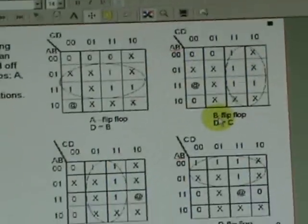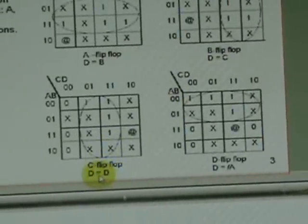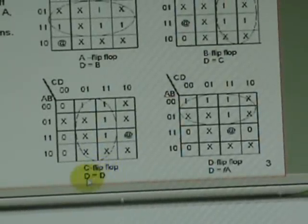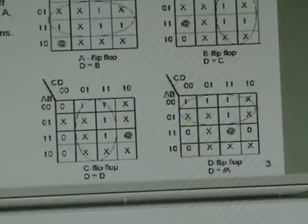For the next flip-flop C, the data input is D output of D flip-flop. And for the last D flip-flop, the D data input is A complement. Using this, we can now proceed.